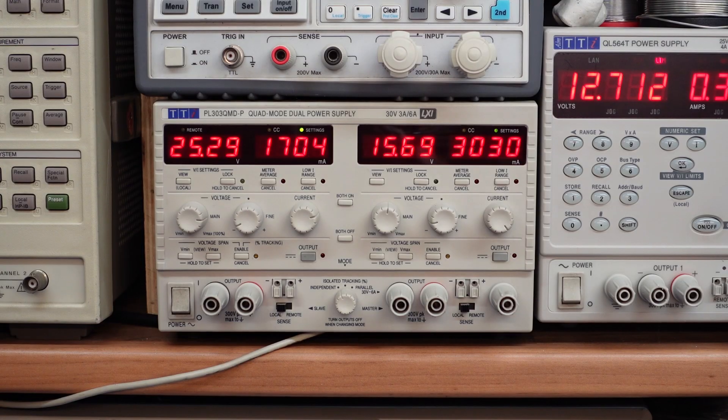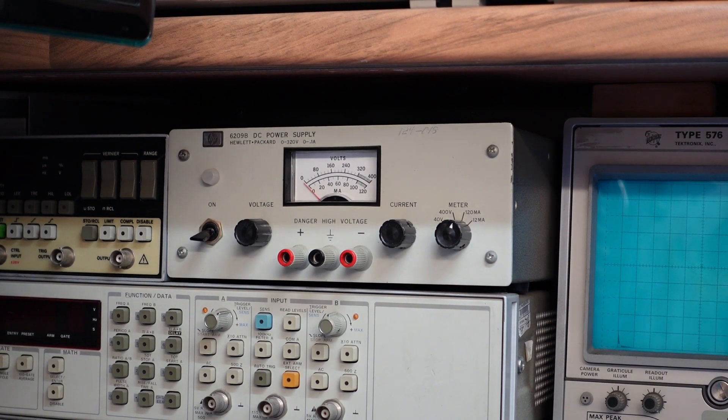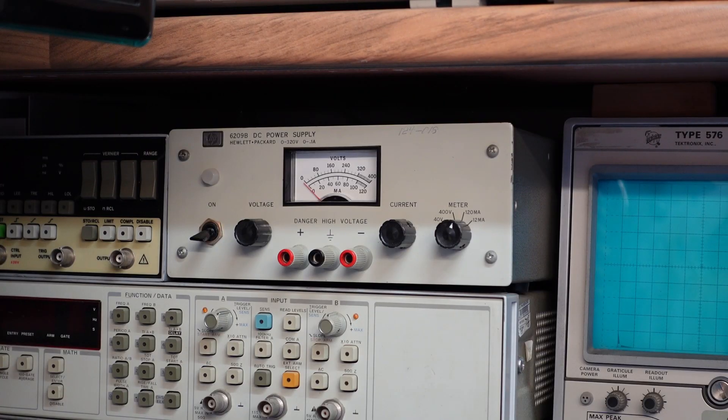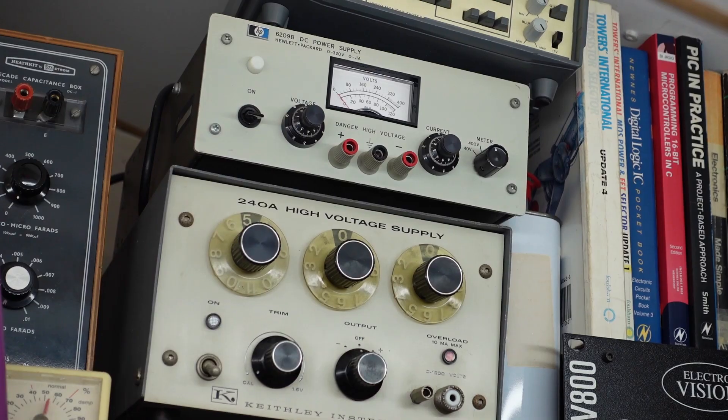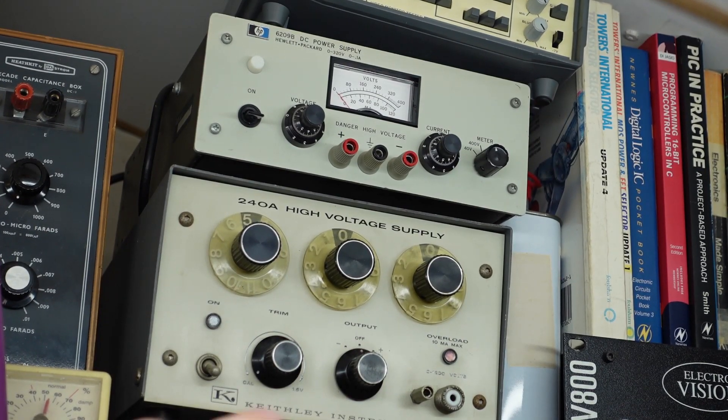And then another TTI, this is a PL303QMDP. This is a great little linear power supply, very stable—it's one of my favorites. And if I need even more voltage, I have these old HP power supplies, a 6209B. That'll take me to 320 volts. I've got another one up there just in case I need more than that.